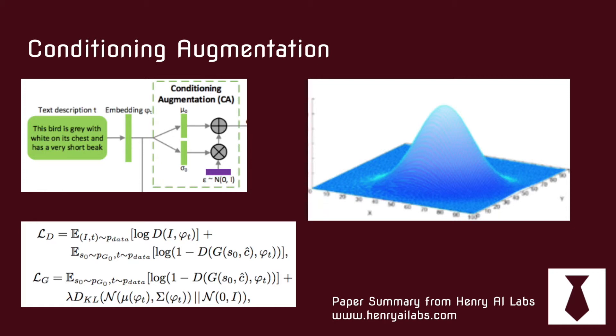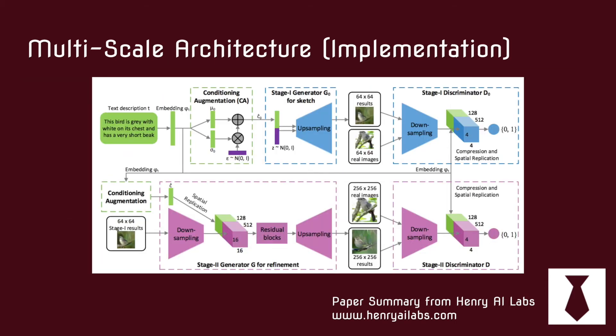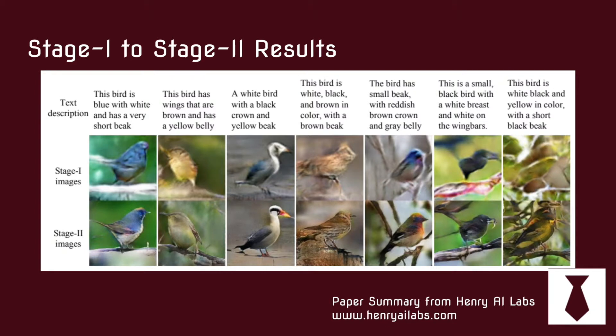This image shows the impact from stage 1 to stage 2. You can see it's an interesting set of examples showing how stage 2 corrects stage 1 and adds additional details. Some of these are really good — especially the first one, the blue bird, and the fifth one. You can also see in the architecture diagram that the text embedding is re-added in stage 2, so it can not only produce a higher resolution image but also correct missing details from the original text embedding.